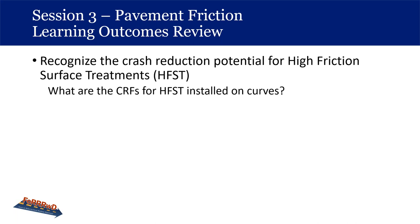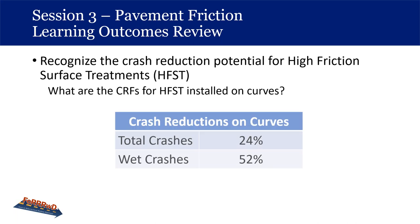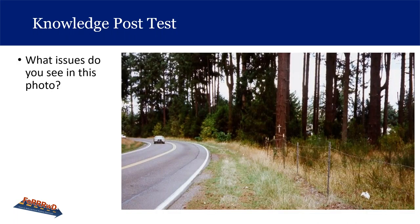What are the crash reduction factors for high friction surface treatment installed on curves? For wet crashes — conservatively — you can expect a 52% reduction; total crashes, 24%. But we saw one instance where it reduced all crashes to zero. So those are the results of real research, and you can expect even higher than those conservative numbers.